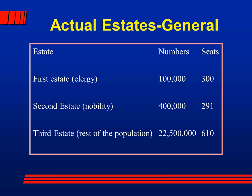In reality, they made some adjustments. The actual Estates General on May the 5th had the first estate with 300 seats, the second estate with 291 seats, and they gave the third estate 610 seats. So if you voted by numbers, the third estate would win all the time — but the idea was that's not the way it was going to work.